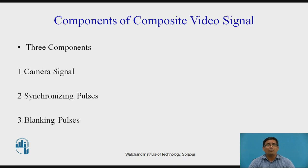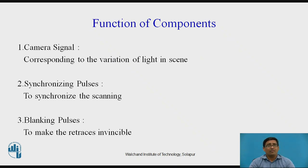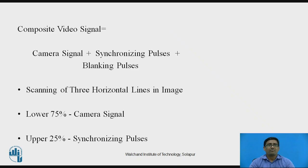There are basically three components of the composite video signal. First, camera signal. Second, synchronizing pulse. Third, blanking pulse. The functions of these components are: the camera signal corresponds to the variation of light in the scene; synchronizing pulses synchronize the scanning at the transmitter as well as the receiver; and the blanking pulse makes the retrace invisible. These three signals combine to make the composite video signal.